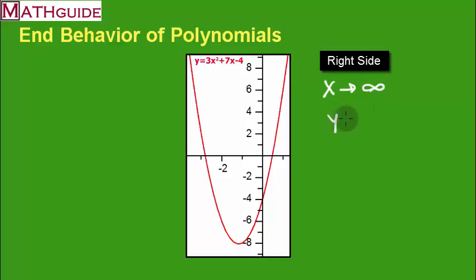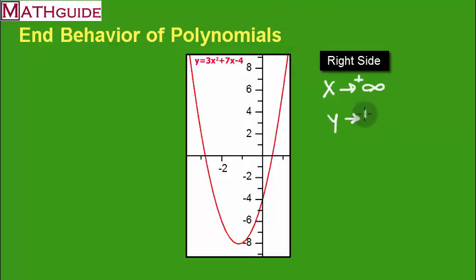What's happening to the y values? As x is going to the right side — the numbers are getting bigger, that's positive infinity — the y values keep on getting bigger and bigger too. They go from 2, 4, 6, 8 and keep going higher and higher. So we say that the y values are going to positive infinity as well. That's the right side of the graph.